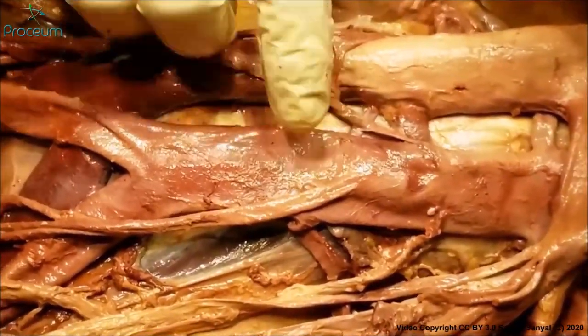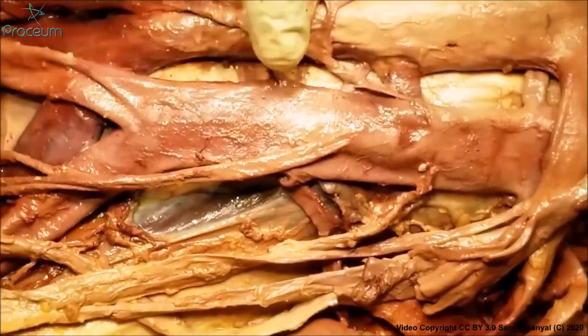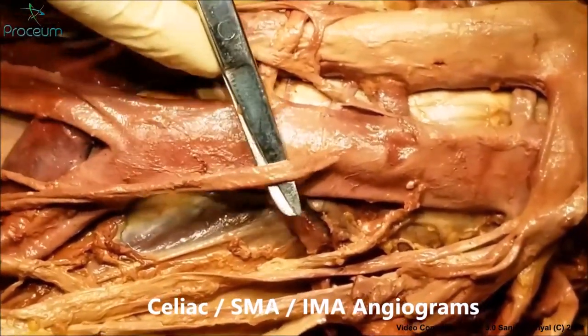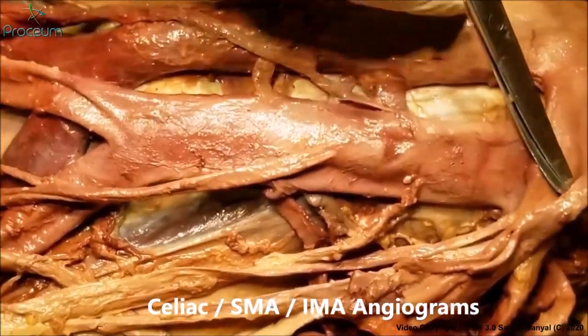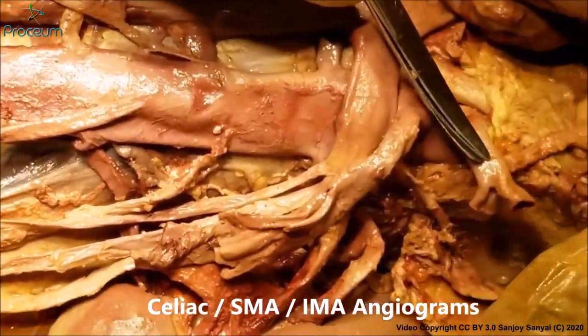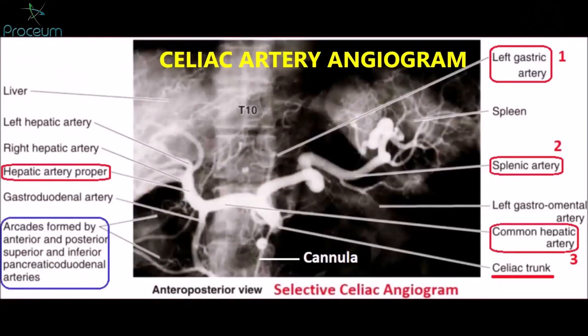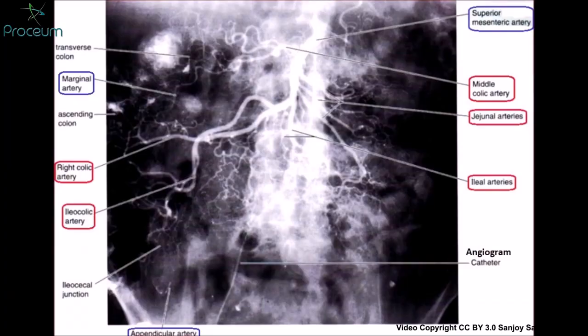After that, under a C-arm imaging intensifier, we can cannulate either the inferior mesenteric artery, the superior mesenteric artery, or the celiac trunk, and get the respective angiograms. This is a selective celiac artery angiogram, and this is a superior mesenteric angiogram to show the distribution of the vessels.